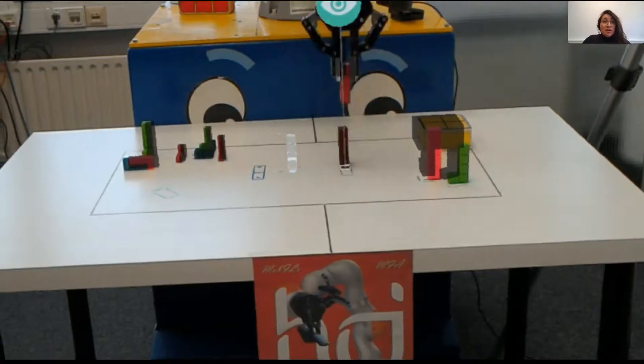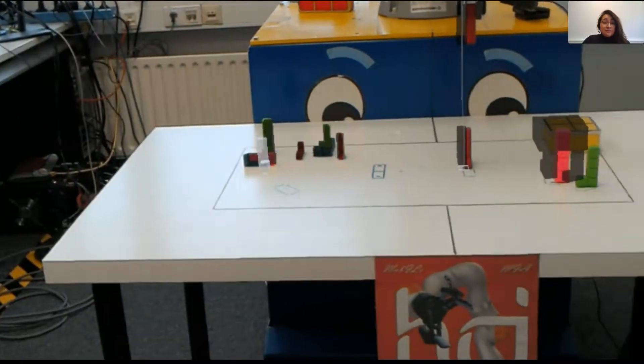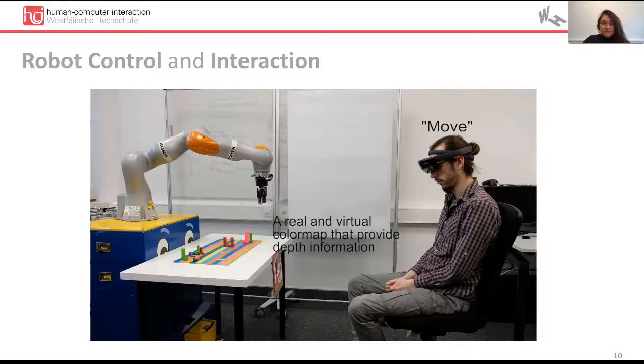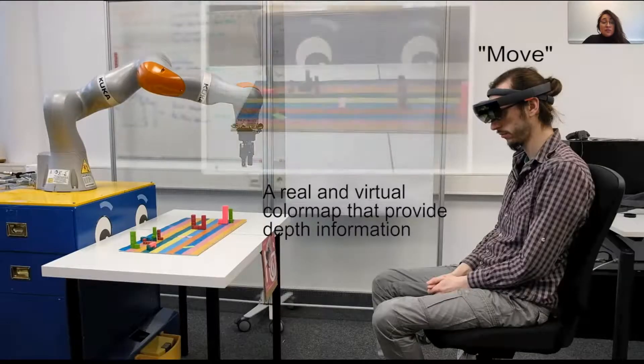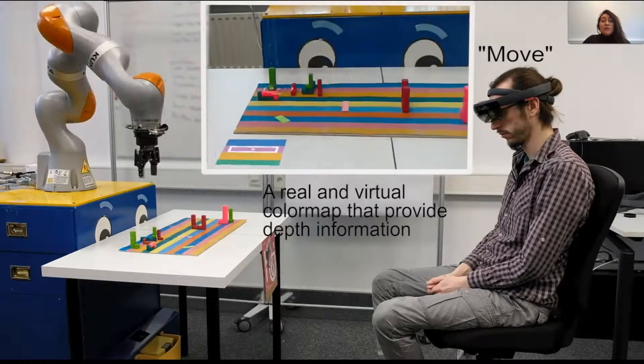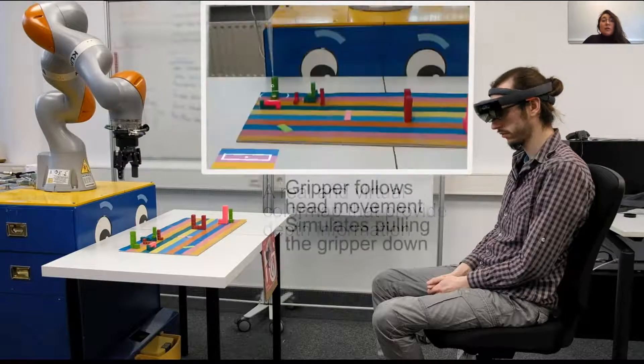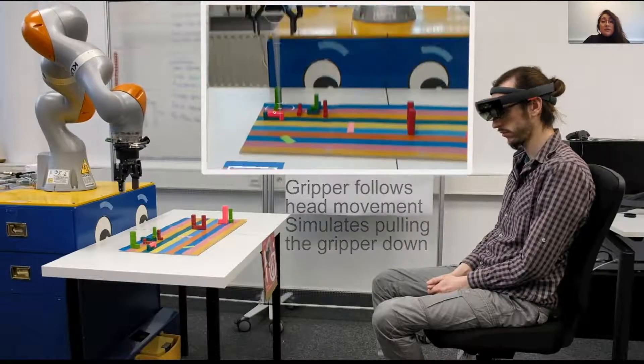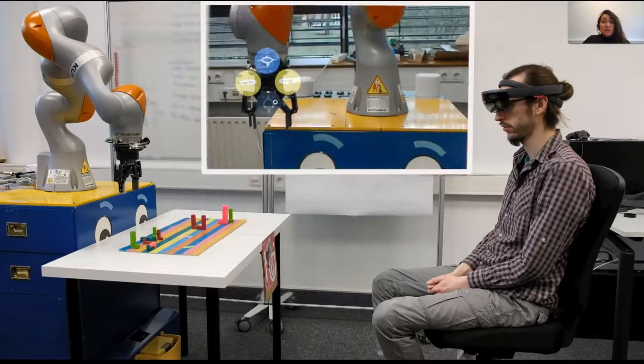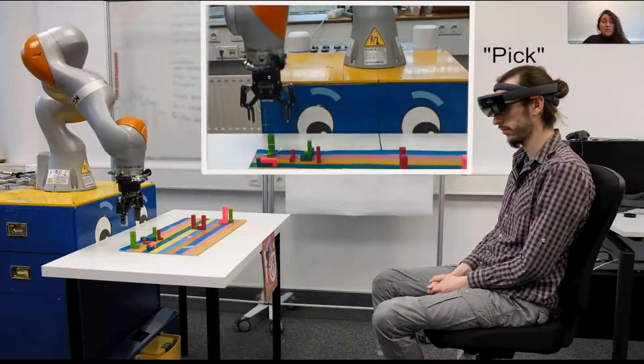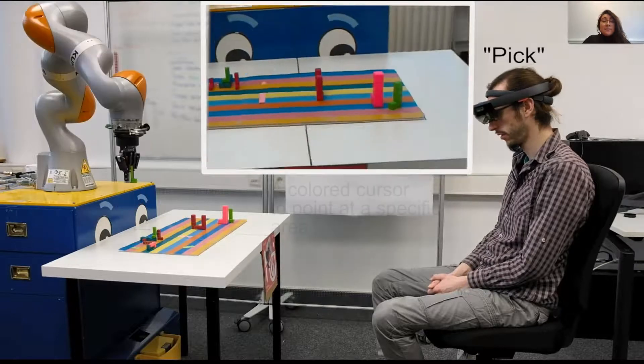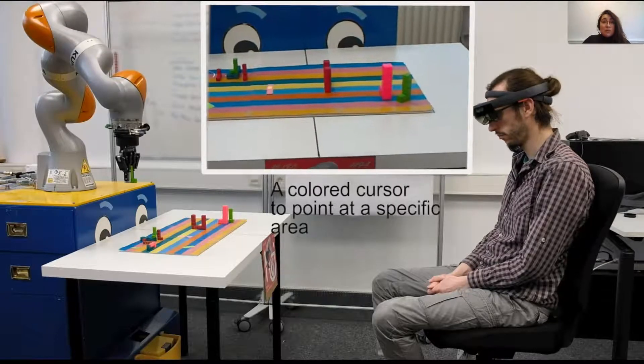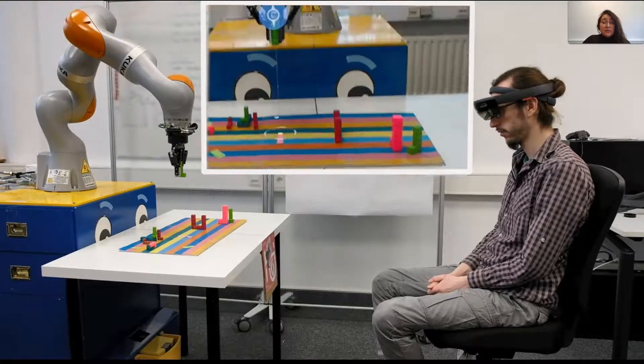Our robot control concept involves the use of hands-free interaction through head movements to point and voice commands to commit an action. We use the Microsoft HoloLens 1 to display our visual cues and present basic robot controls for fine positioning that are virtually attached to the gripper. Here we can see our robot control concept working together with our basic cues design.